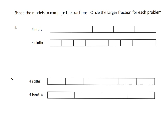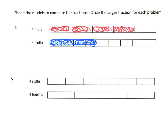It says to shade the models to compare the fractions and then circle the larger fraction. First we've got four-fifths and four-ninths. Four-fifths is shaded in four sections, and four-ninths is shaded in four sections as well. In both cases we shaded in four pieces, and we can clearly see that four-fifths is larger than four-ninths.